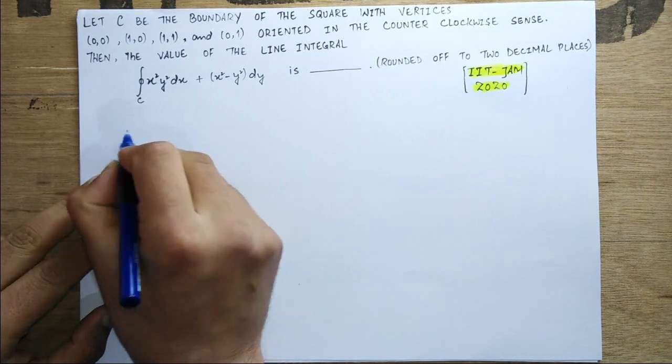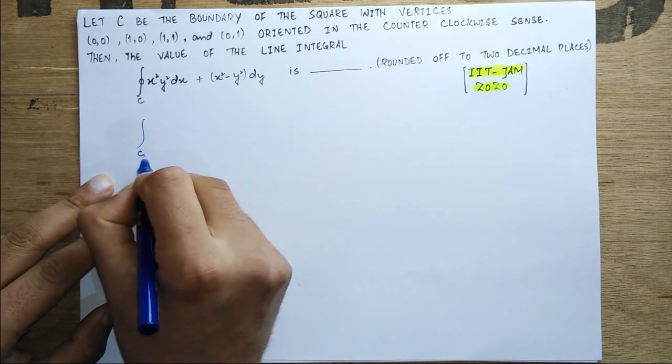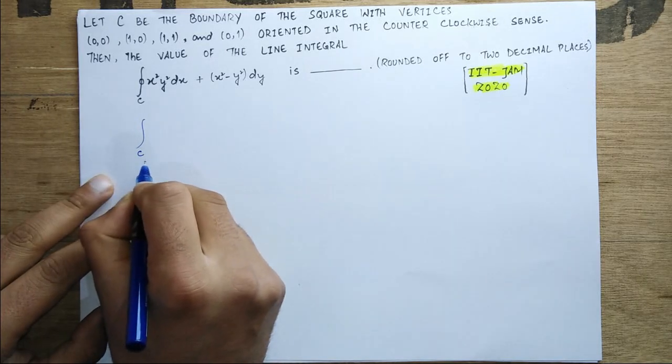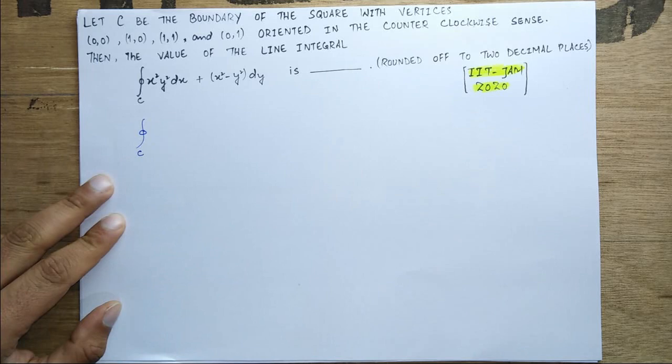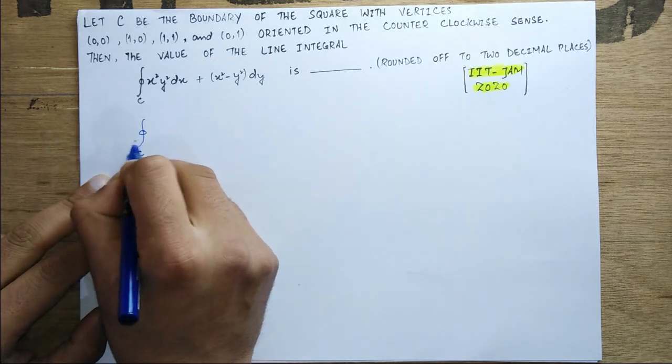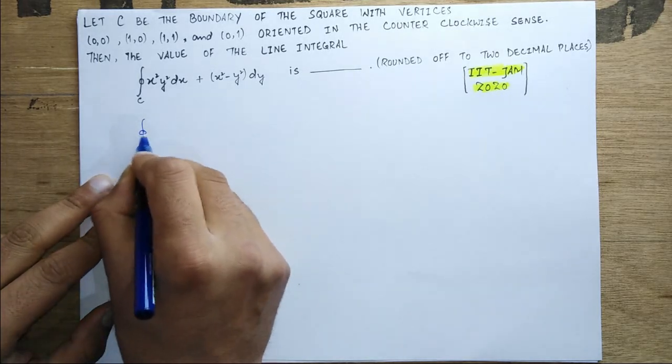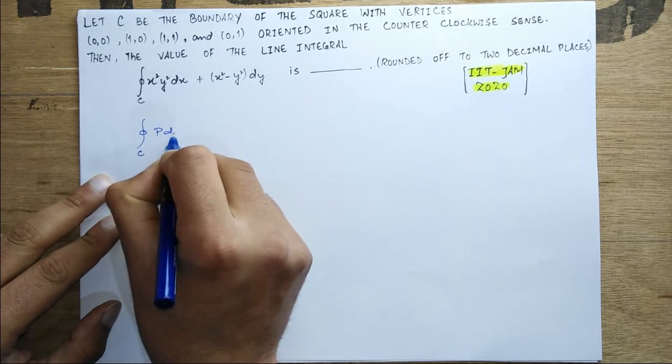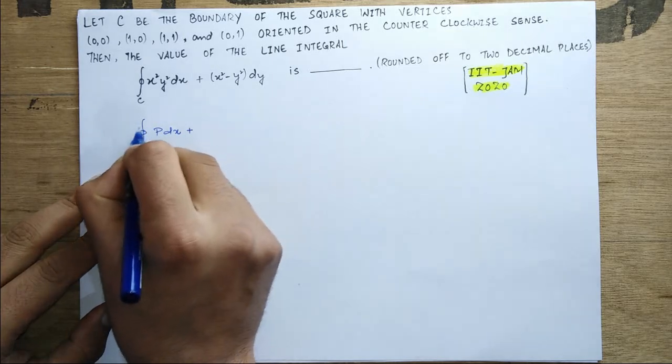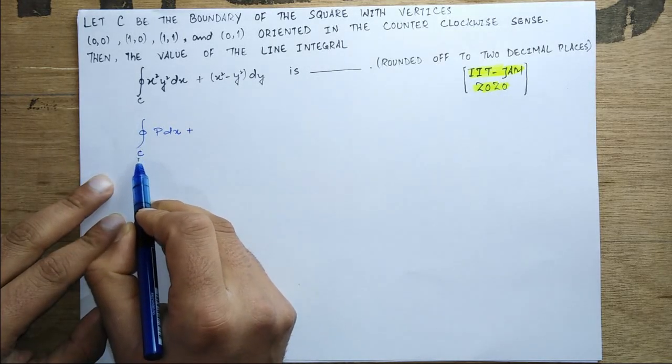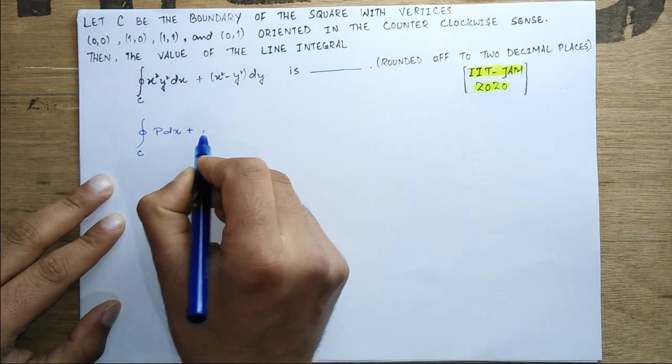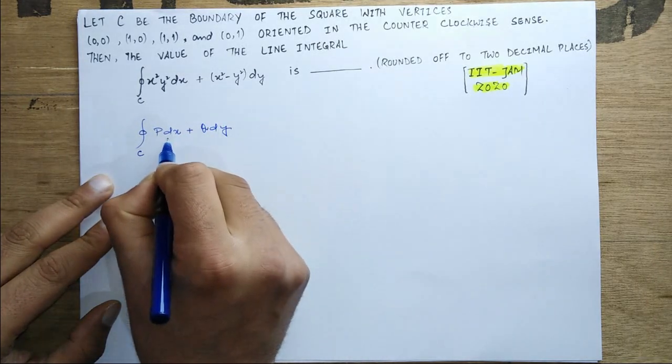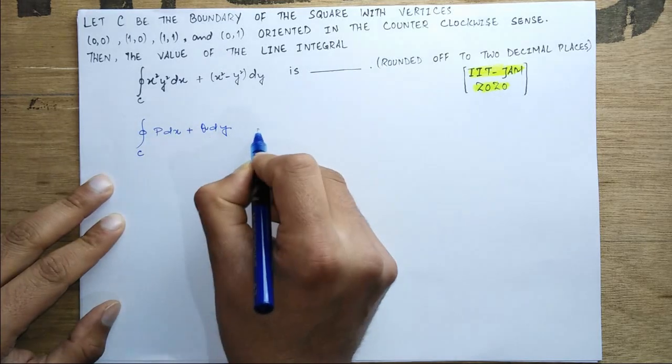Green's theorem, what does it mean? The integral over C, which is a closed, simple closed curve. We represent this closed curve by taking this little circle here. Then if the integral is taken over a simple closed curve C, then p dx + q dy, where p and q are functions of x and y, equals...